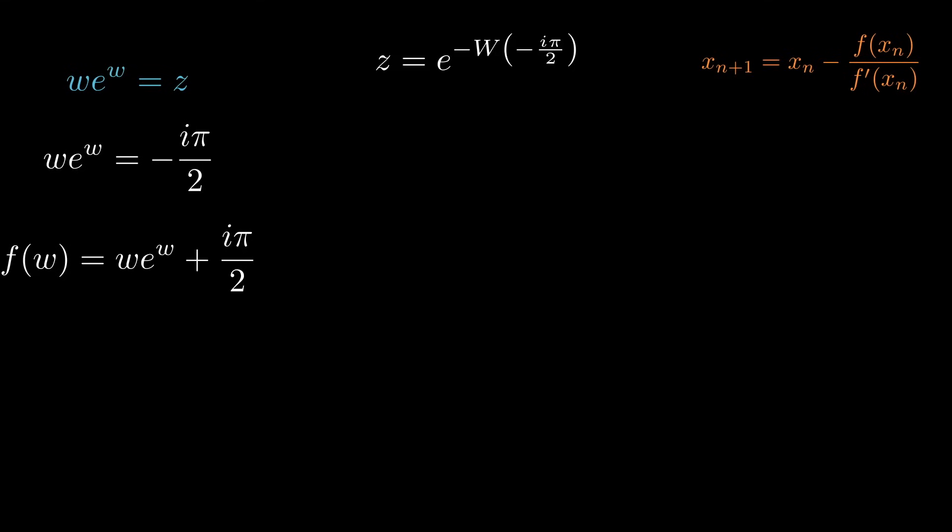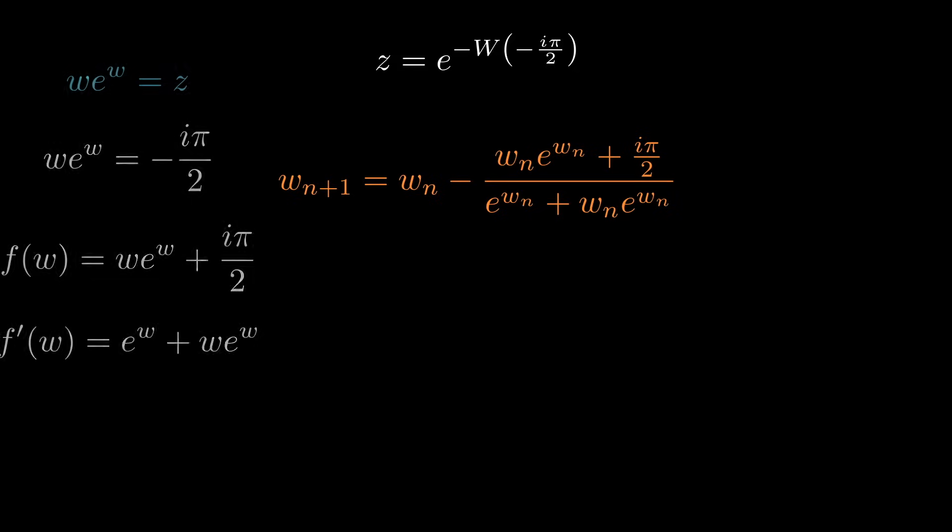We need its derivative, you just need to do the product rule with the W e to the W part. The derivative of a constant is zero. And this is what we're going to keep plugging into Newton's method. You do need to pick a starting point, an initial value.